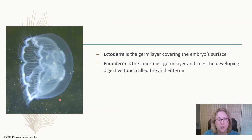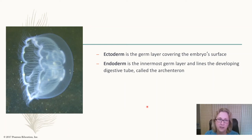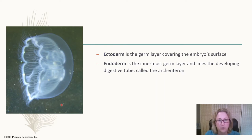All animals except sponges have at least two germ layers. Sponges do have two layers, though we kind of exclude them from this classification. Even the radially symmetric jellyfish and ctenophores have two layers. This image shows those two layers really nicely — you can see the outer layer and the inner layer with no cells in between.